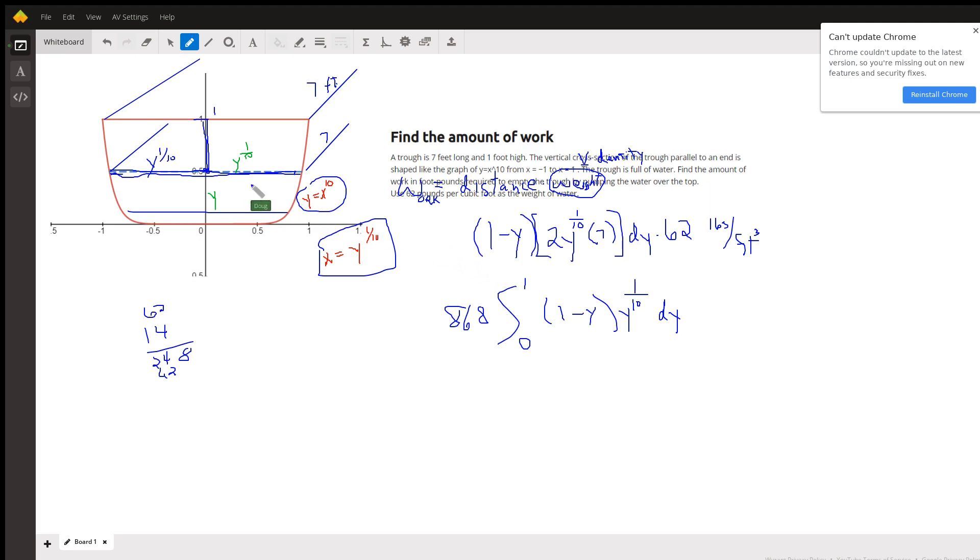The amount of work required to move a slice is its distance, one minus y, times its weight. The weight is the volume times density. The volume is the width, 2y to the 1/10th, times seven, times dy, and the density is 62 pounds per cubic foot. That's how much that slice of water weighs.